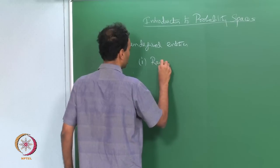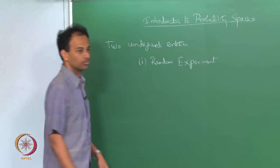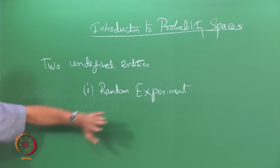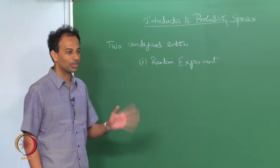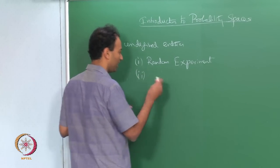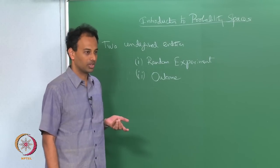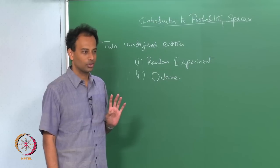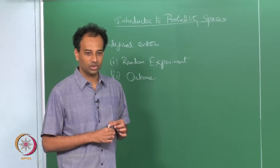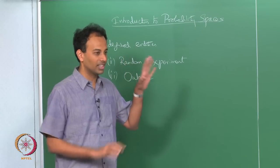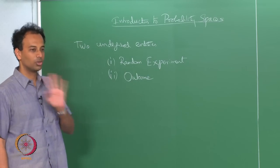The first undefined concept is the concept of a random experiment. We do not define what it is — we have to understand it just in English: it is an experiment whose outcome is random. Which brings me to the second undefined concept, which is the outcome of the random experiment. Just like in geometry you do not define a point, or in number theory you do not define what a number is, you cannot define everything.